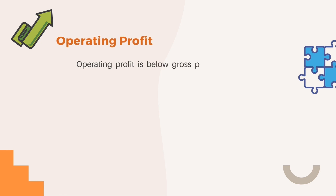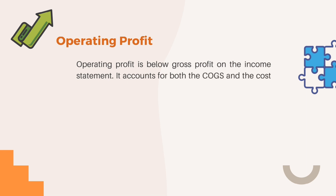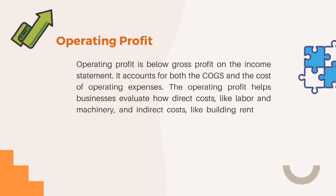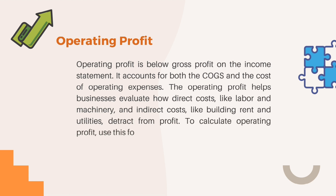Operating profit is listed below gross profit on the income statement. It accounts for both the cost of goods sold and operating expenses. Operating profit helps businesses evaluate how direct costs like labor and machinery, and indirect costs like building rent and utilities, affect the business. The formula to calculate operating profit is: Operating Profit = Gross Profit − Operating Costs.